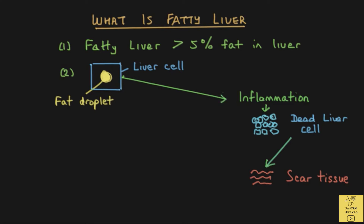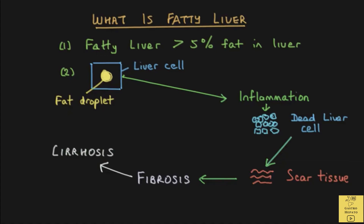The liver has a large reserve capacity. However, the function of the liver may be affected when less than 25% of the liver is healthy. In medical terms, the presence of scar tissue in the liver is called fibrosis. When the majority of the liver is replaced by scar tissue, the medical term used to describe this condition is cirrhosis.